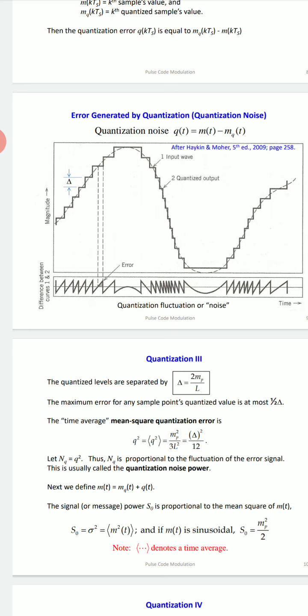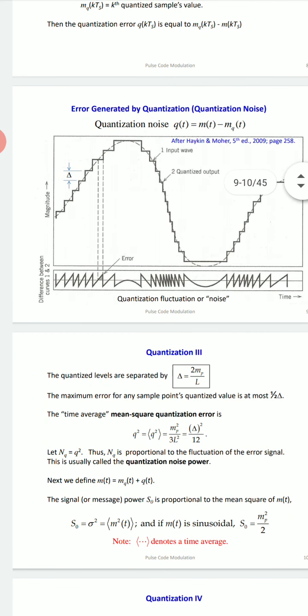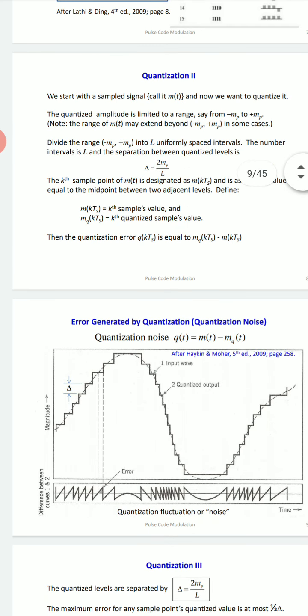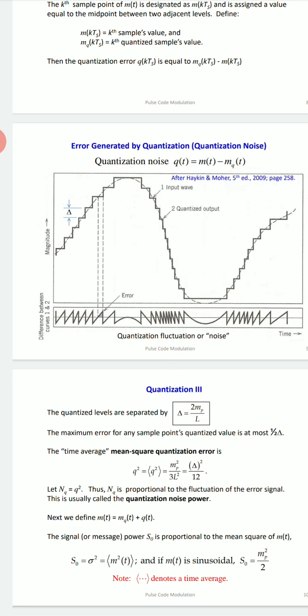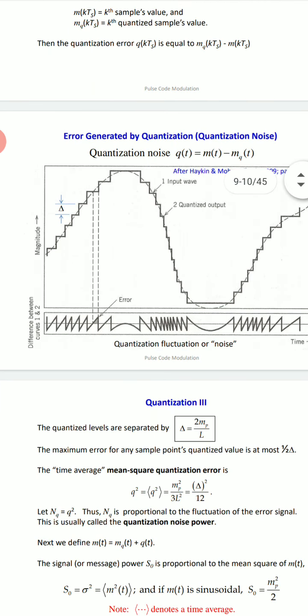When transmitting analog signal into digital in PCM, the sampling process gives rise to a train of samples with amplitude depending on the instant of sampling. For the range from -mp to +mp we get the quantized sample, but we also get quantization error equal to m(t) minus the quantized sample mq(t). The sampled input wave is shown as a dotted sinusoidal line and the quantized output looks like steps. The difference between the two is the quantization noise.